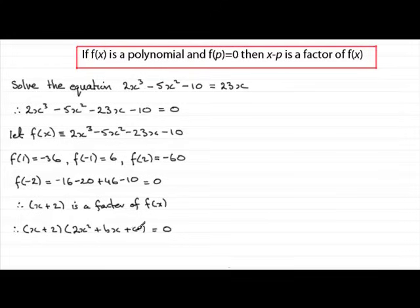The next easiest term to get is this c. The only way you're going to get a constant minus 10 is by multiplying the 2 with the c. So 2c must come to minus 10. So clearly c must be minus 5.